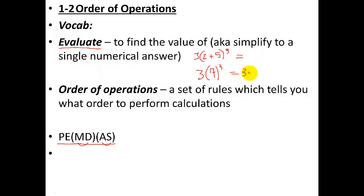So this is three times 343. Notice it was important to do the exponent before I multiply by three, and now finally I can multiply by three and get my final answer, which is 1029. So we follow the order of operations to simplify or evaluate an expression.